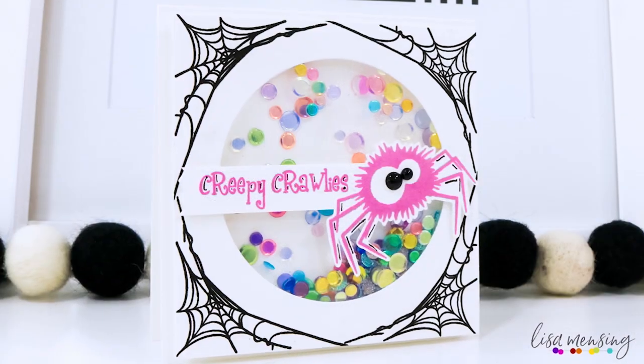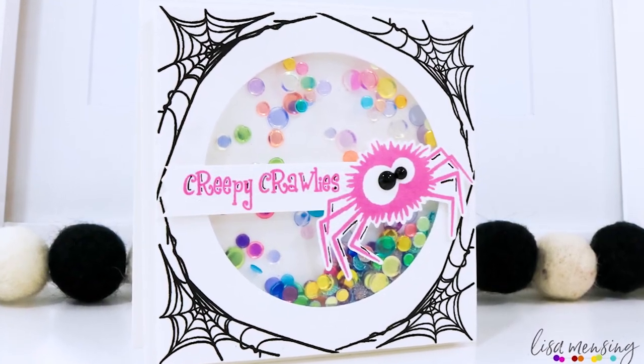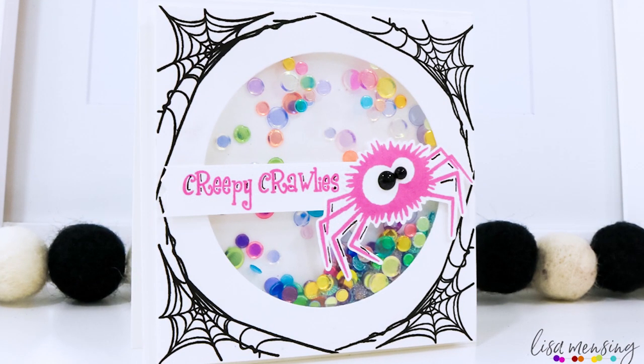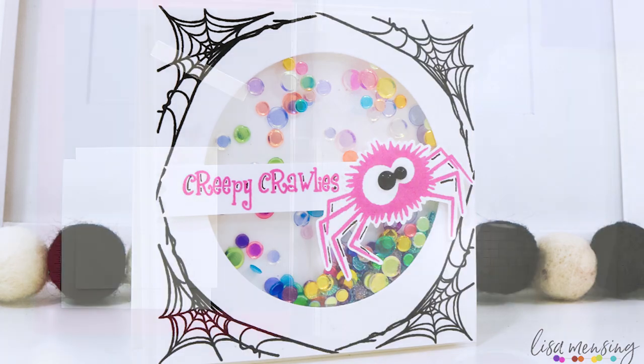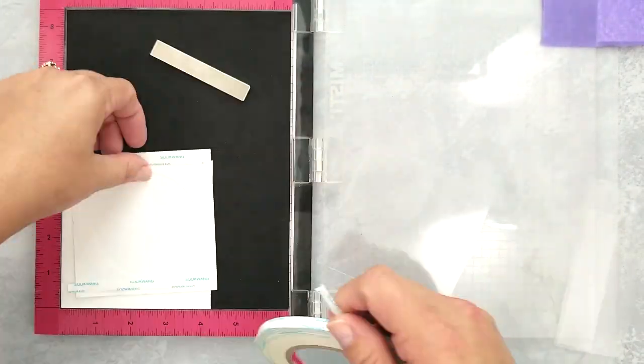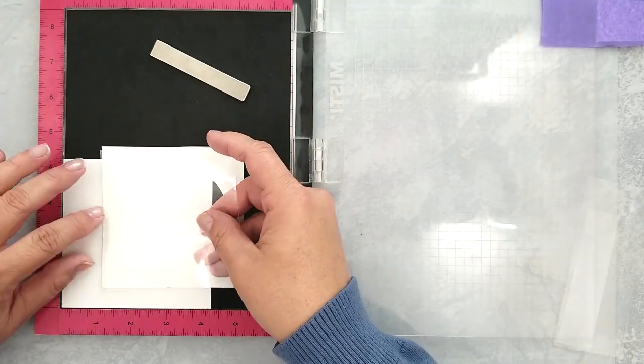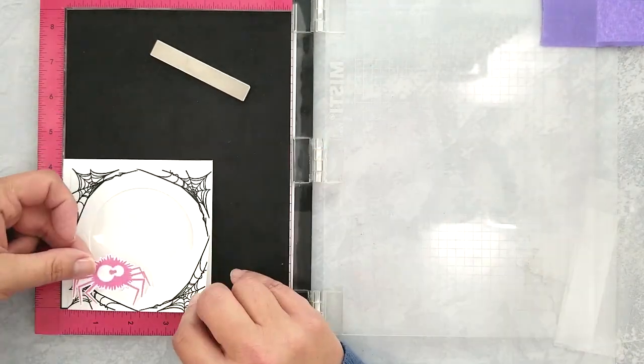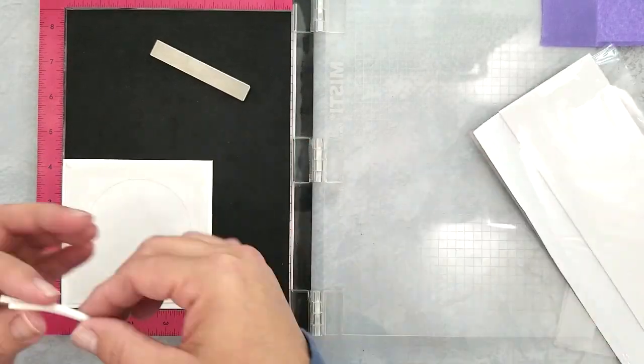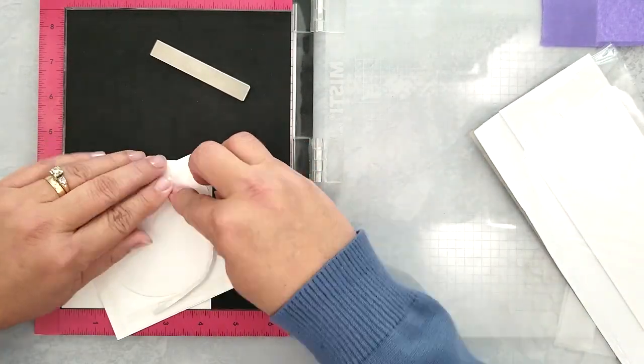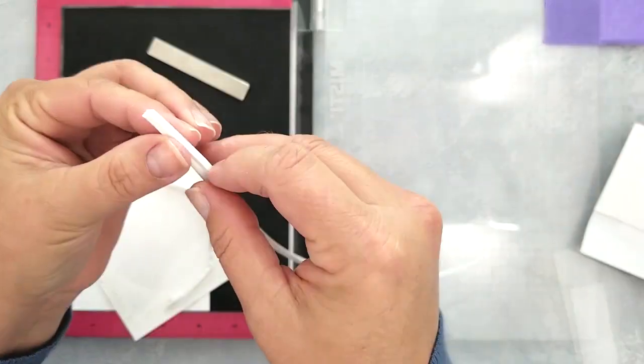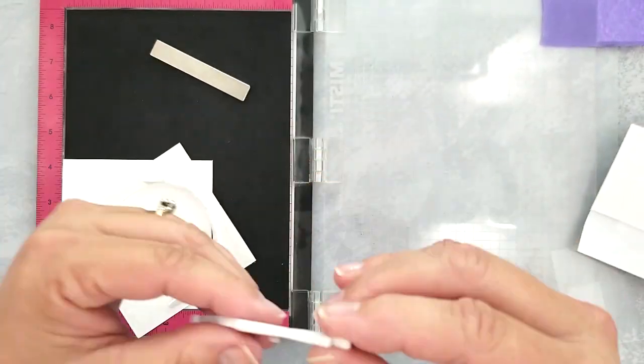I am using 4 1⁄4 by 4 1⁄4 inch card bases for all the cards in the video. To start our shaker, cut a piece of acetate to 3 7⁄8 by 3 7⁄8 of an inch and adhere it to the back of one of the stamped panels using a heavy-duty adhesive. Then adhere 3D mounting foam strips to the back side of the acetate to hold our sequins in.